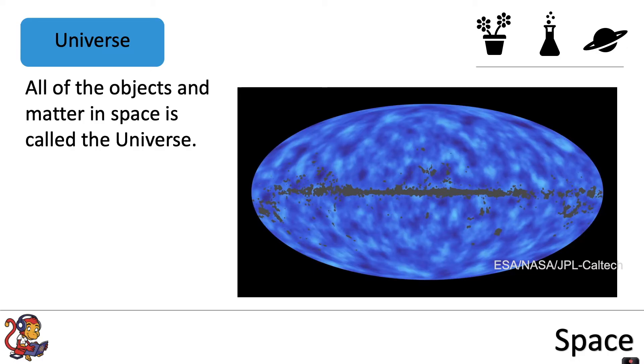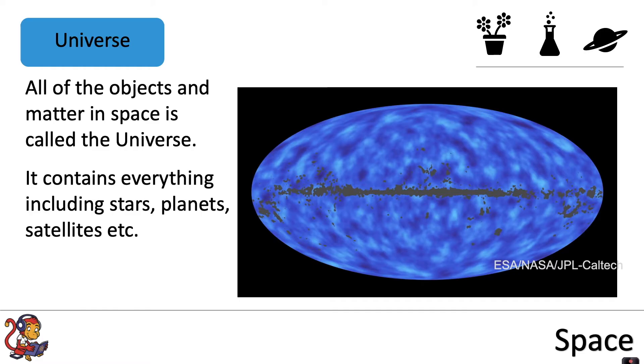All of the objects and matter in space is called the universe. It contains everything including stars, planets, satellites, etc. and the universe is continually expanding. It's getting bigger and bigger.